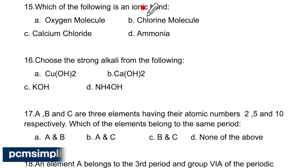Which of the following is an ionic bond? Ionic will be between a metal and a non-metal. So calcium chloride. Choose the strong alkali from the following. Right on top of EC series, which element do you see? KOH. So this will be the strong alkali.